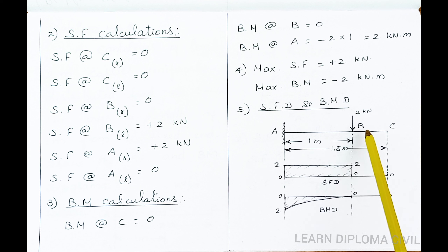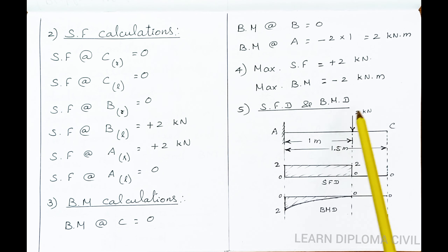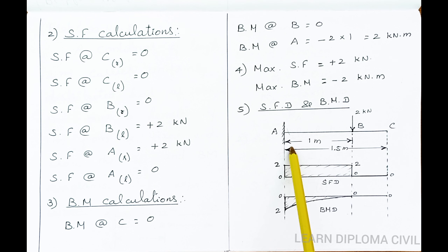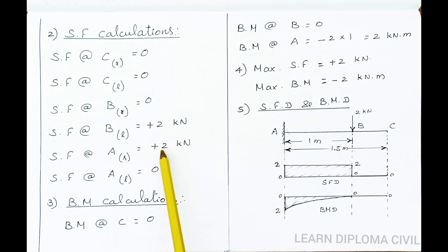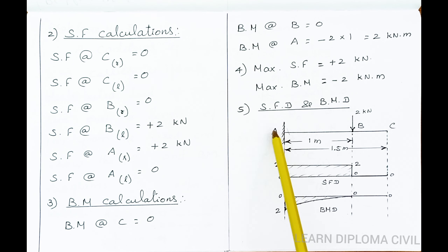The section on the right side of B has a downward load of 2 kN. The right side downward direction is positive. Therefore, shear force at left of B is equal to plus 2 kN. For point A, the right side section also has the 2 kN downward load. Therefore, shear force at right of A is equal to 2 kN. Shear force at left of A is equal to 0.